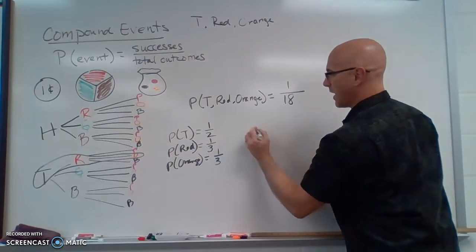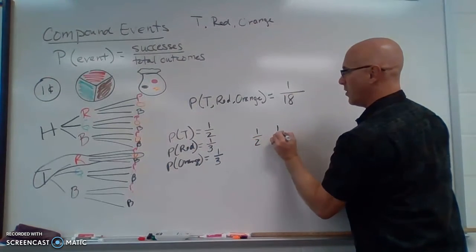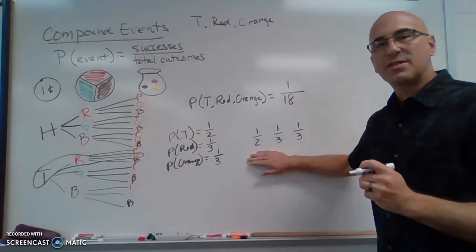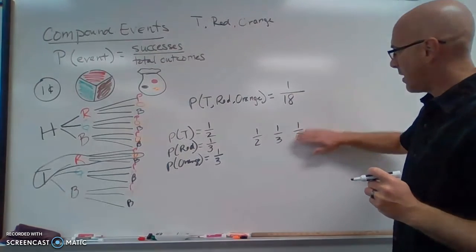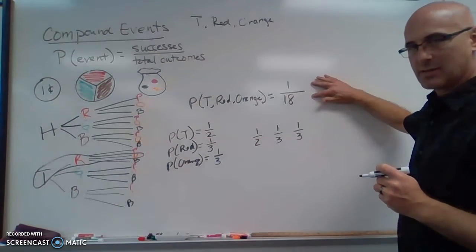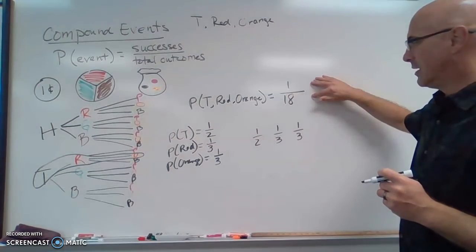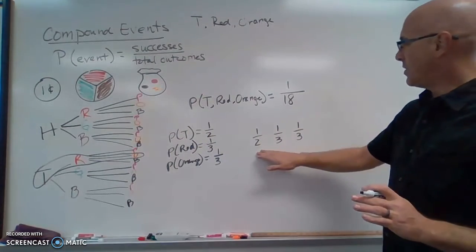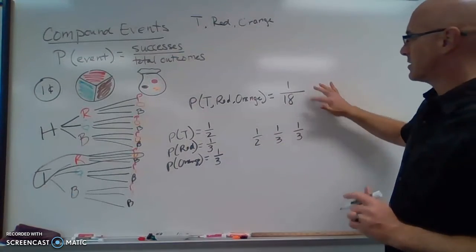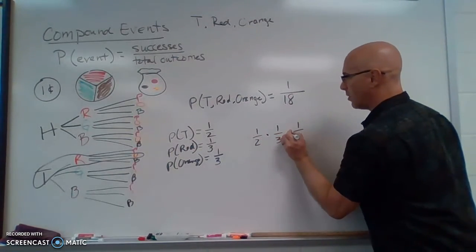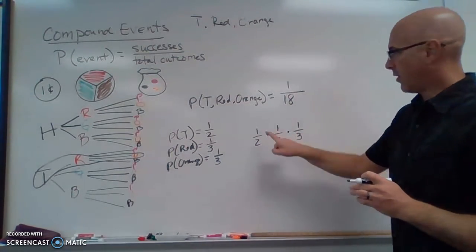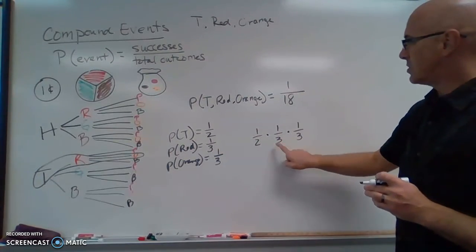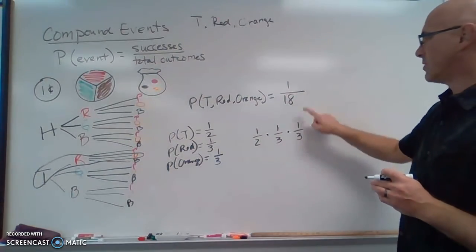Now let's look at this. We've got one half, one third, and one third. Can we see how these three fractions might relate to this? Some of you may have just realized how these fractions can get to this. That is if you multiply them all together. 1 times 1 times 1 is 1. 2 times 3 is 6, times 3 is 18.